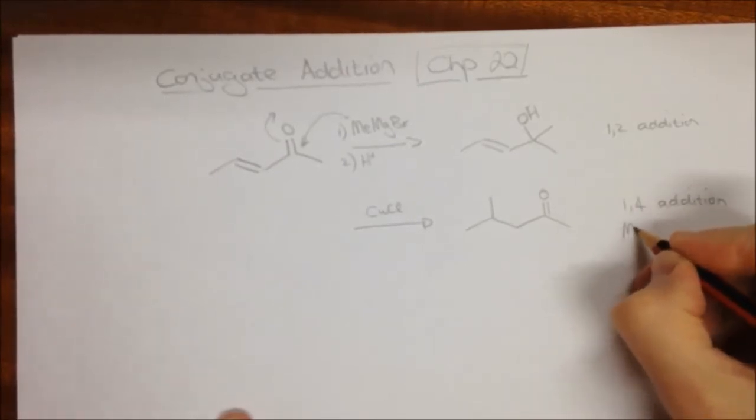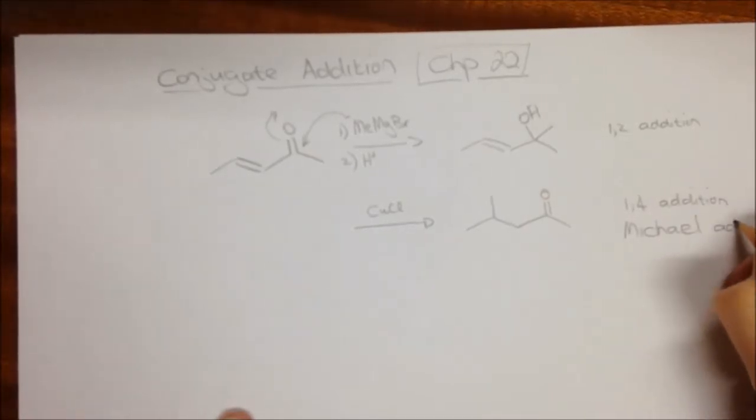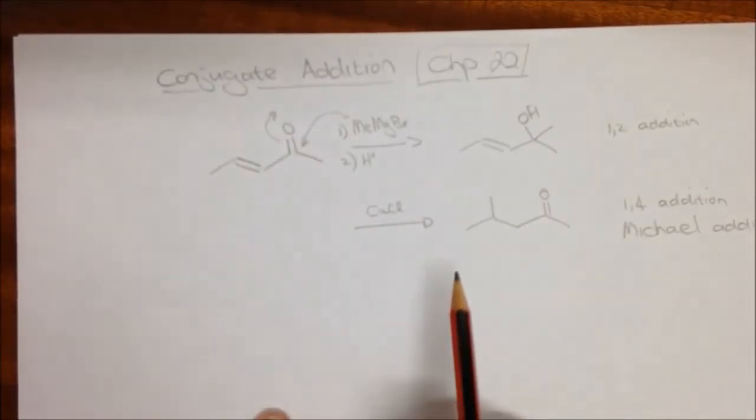And that's how it comes along. There's another name for this, and that is that these 1-4 additions are also trivially known as Michael additions, and you'll hear that term being mentioned a few times as well. The more general term is a conjugate addition.